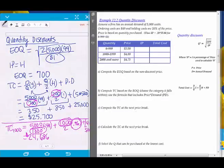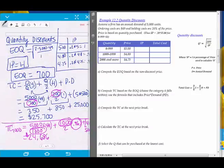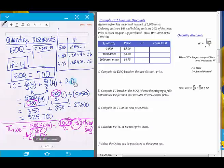Now we're on to quantity discounts for this next problem, problem 12.2. It says assume a firm has an annual demand of 5,000 units, ordering costs are $49, holding costs are 20% of price, and price is based on quantity purchased. First thing we're going to do is compute the economic order quantity. It's exactly the same as we had done before. 2 times 5,000 times 49 divided by 1. This gives us an economic order quantity of 700. The only difference here is that in this problem, IP is equal to H, which means that H is no longer just given to us. We have to compute it.